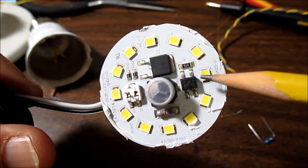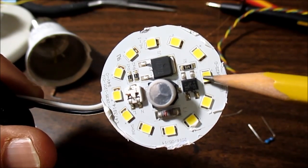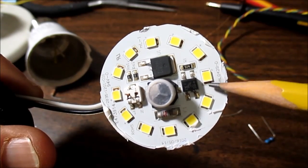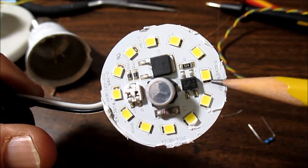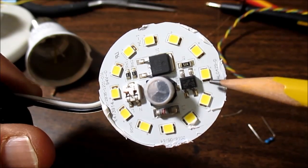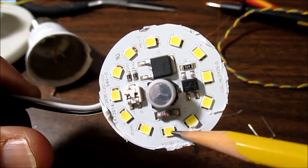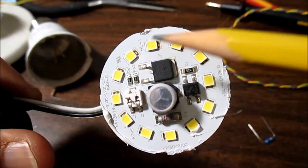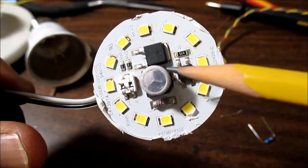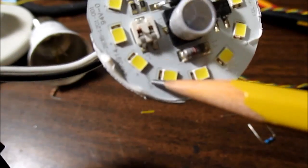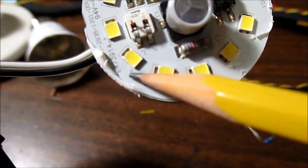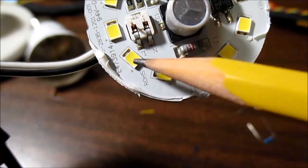I went around with a 9-volt battery. There's three die in each package here. With a 9-volt battery and a 1K resistor, I went around and measured each one, tested each one. And they all lit except this one right here, next to the number.